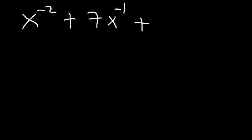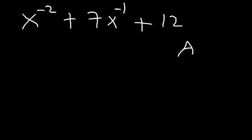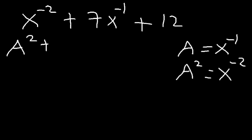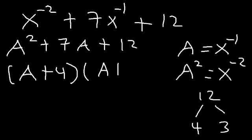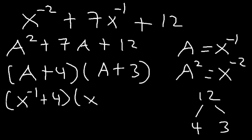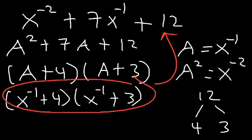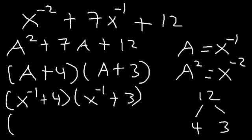Try this one: x to the negative 2 plus 7x to the negative 1 plus 12. This is a factorable expression in quadratic form — notice this exponent is twice the value of the other. We'll factor by substitution: let a equal x to the negative 1, so a squared equals x to the negative 2. We rewrite as a squared plus 7a plus 12. Two numbers that multiply to 12 and add to 7 are 4 and 3, giving a plus 4 times a plus 3. Replacing a with x to the negative 1, or equivalently 1 over x: the answer is 1 over x plus 4, times 1 over x plus 3.